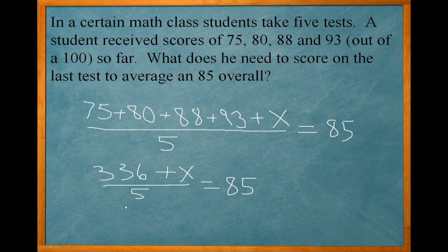Okay, so from here we need to solve for X. The next step I want to do is I want to multiply both sides by 5.